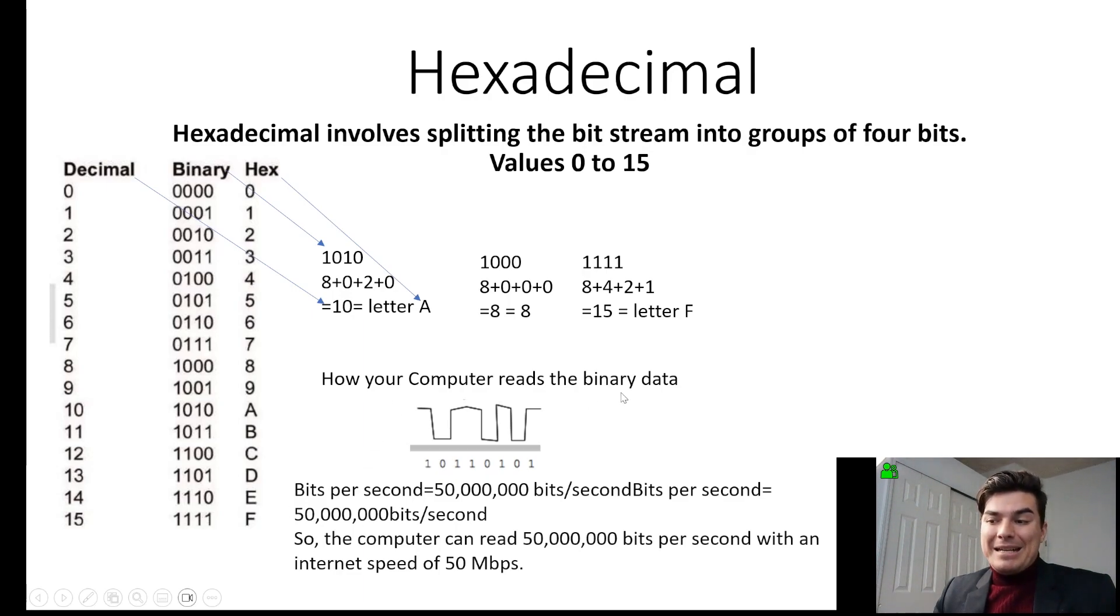Now, your computer reads data in binary, and so that's either 1 or 0. On is 1 and off is 0. So if your computer can read an internet speed of 50 megabytes, that's a big number here. That's 50 million bits per second with an internet speed of 50 megabytes.